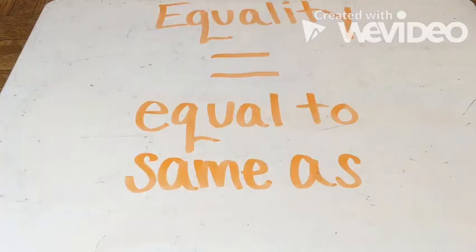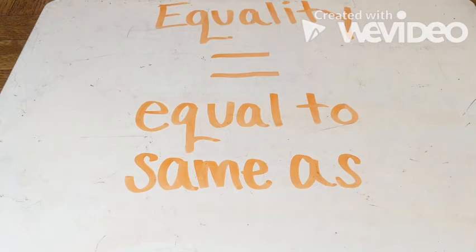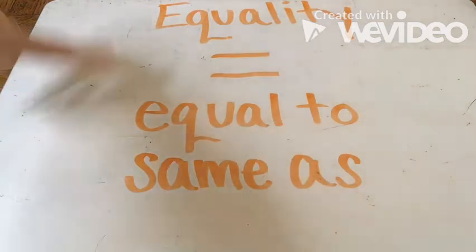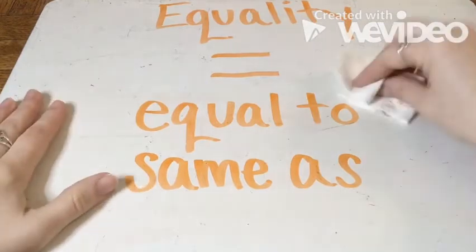Hey everybody, it's Miss Emerson and we are going to be talking about a new topic in math. We're going to be learning about equality. Equality deals with the equal sign. We use the equal sign all the time in math when we're solving addition and subtraction problems, when we're comparing numbers or fractions, and now we're going to use it to compare equations. The equal sign means that something is equal to or the same as something else.